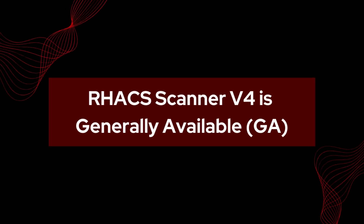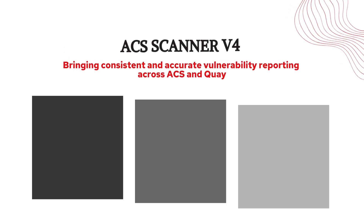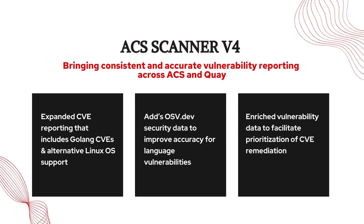4.5 brings with it the general availability of the ACS Scanner v4. Scanner v4 brings expanded CVE reporting including Golang CVEs and supports alternative Linux operating systems, enhancing vulnerability data and management workflows. To ensure a seamless transition, users must explicitly enable it via the Red Hat Advanced Cluster Security Operator or Helm chart deployment options. Just remember, it will become the default in a near future release, and we will update you when that happens.